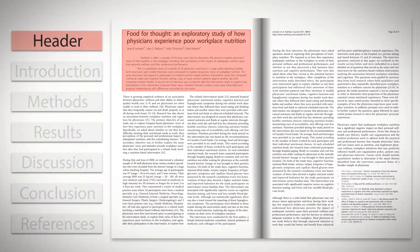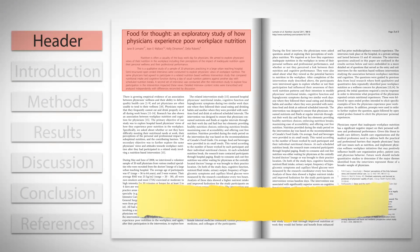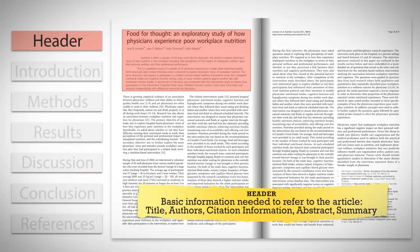The header section comes first. The header contains all the basic information you need to refer to the article, including the title, authors, citation information, and sometimes an abstract or summary of the article.